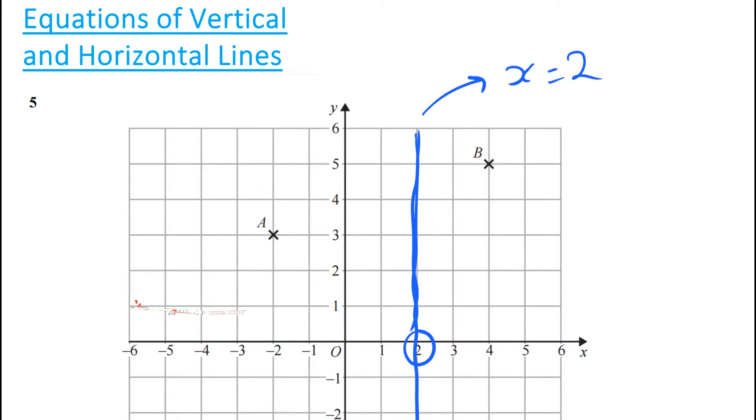Imagine we had a line going across horizontally here through the number 1. What's the equation of that line? Well, it clearly goes through 1 on the y-axis. So this would be the line y equals 1.